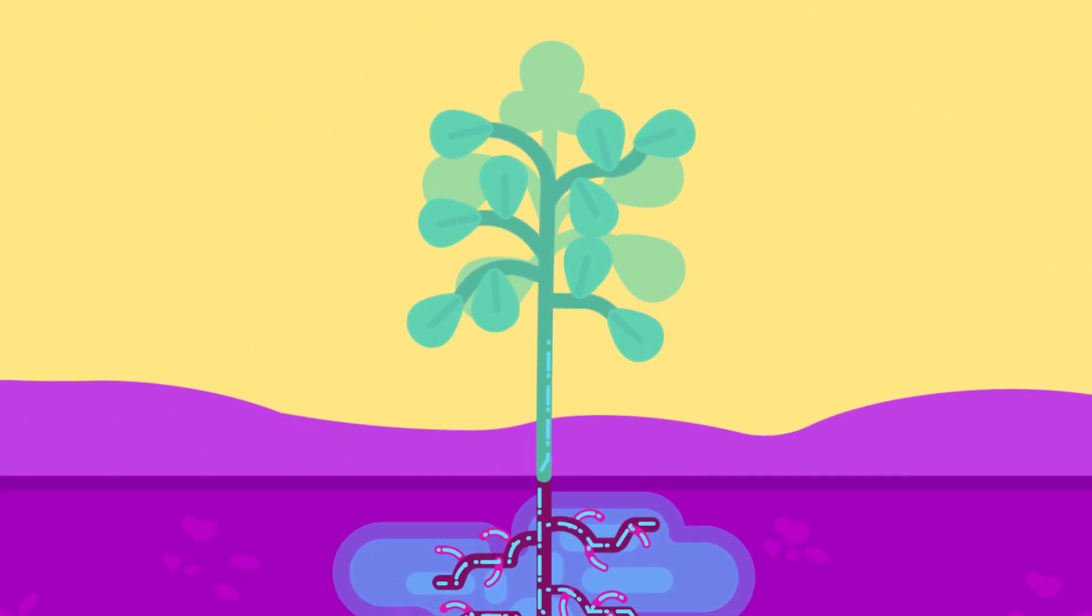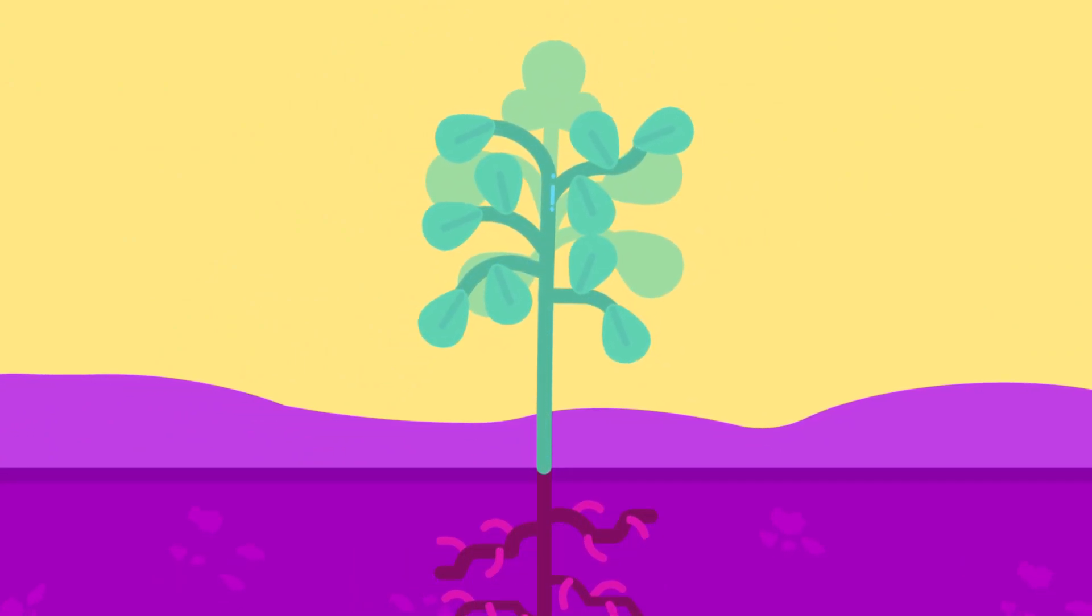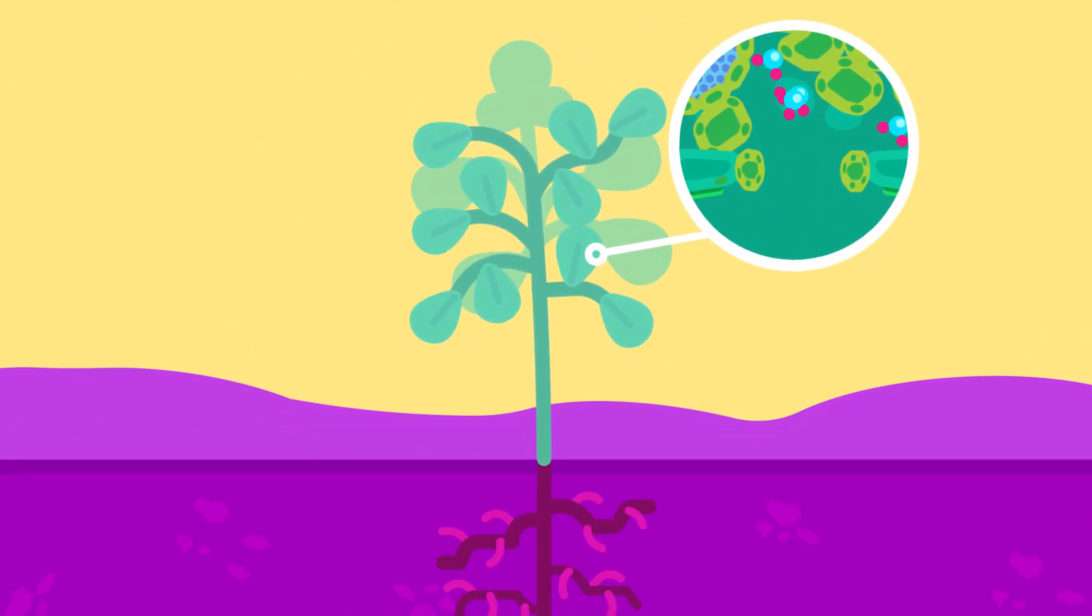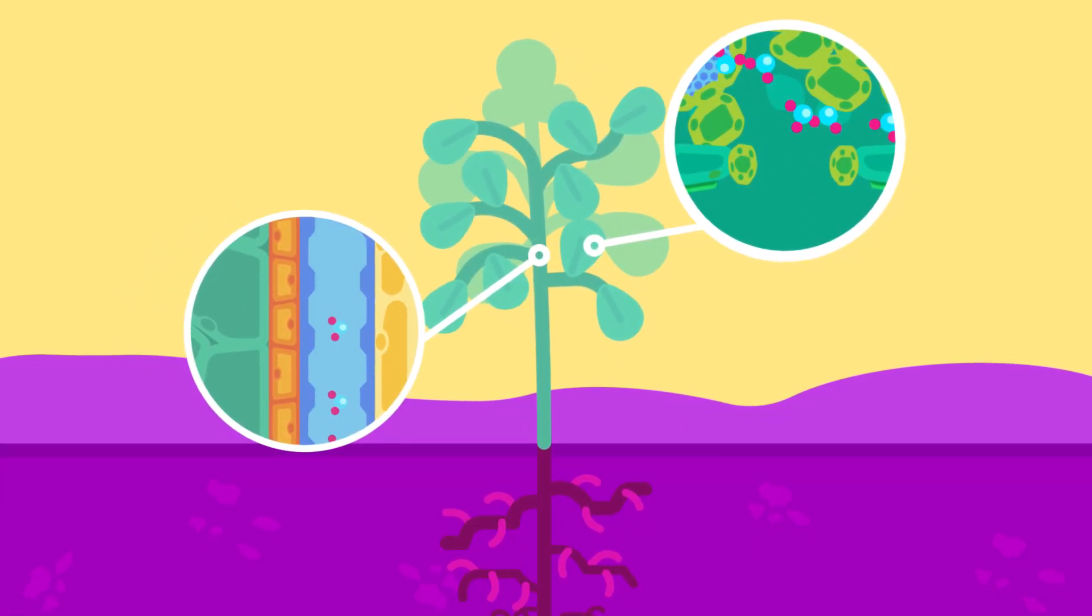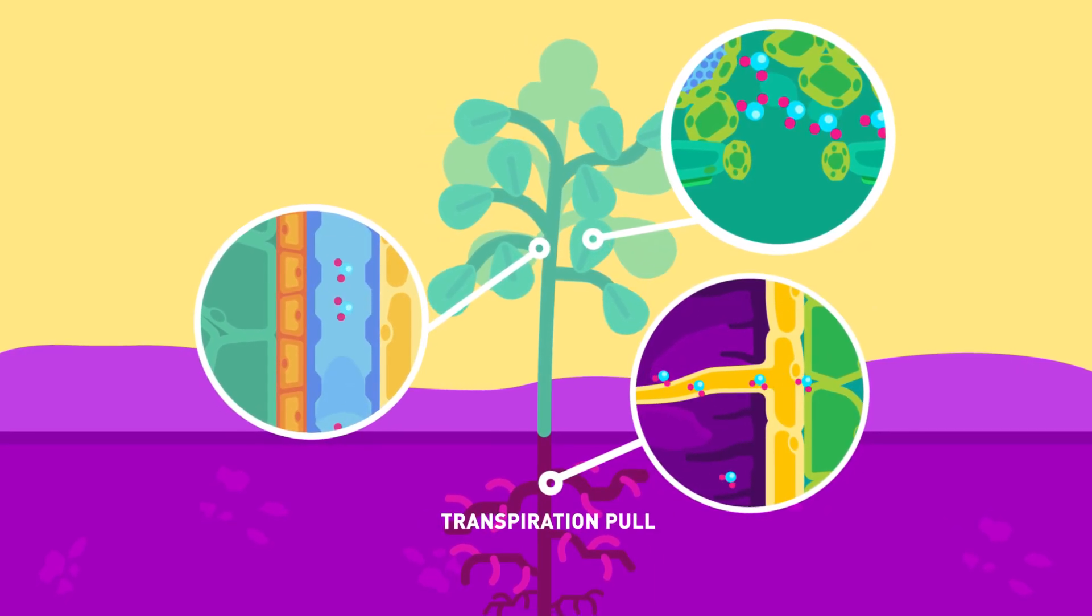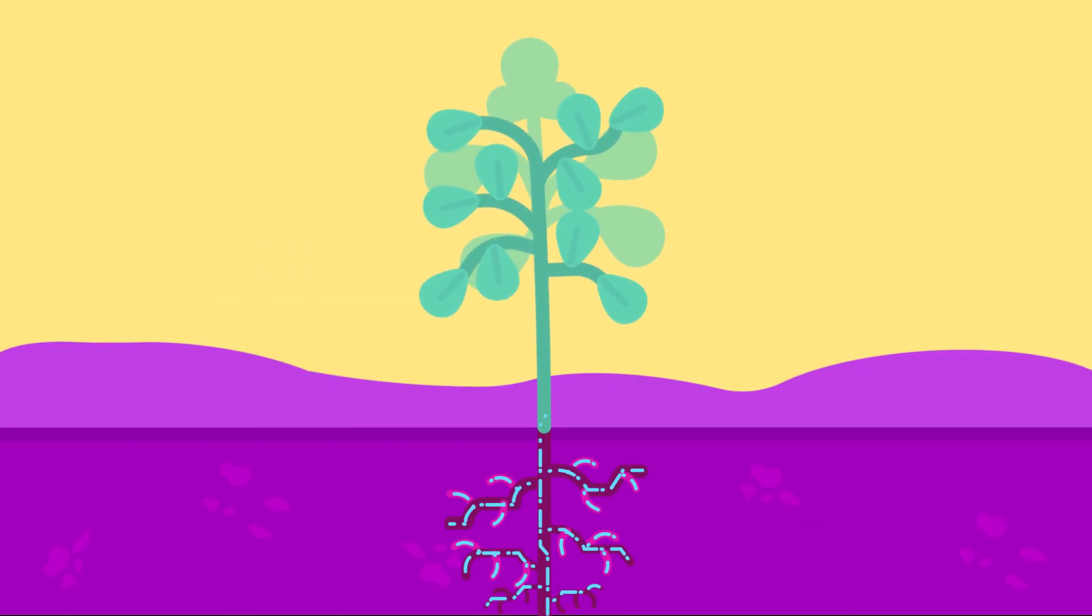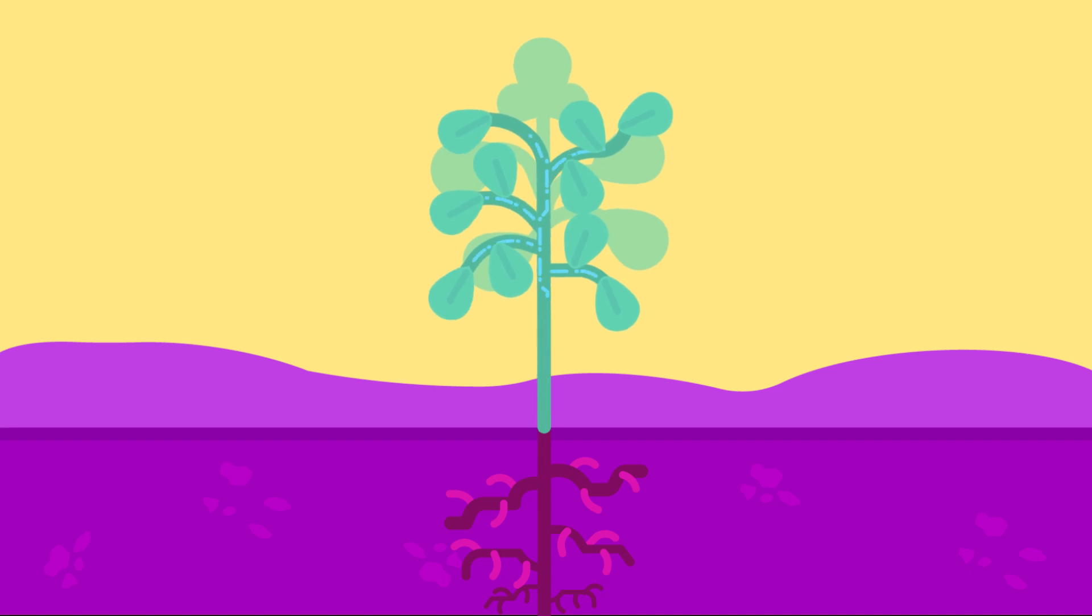Ever wondered how plants draw water up against the force of gravity? The evaporation of water from leaves results in a suction force, which pulls water up the xylem vessels. This suction force is called transpiration pull. It is the main force that pulls water and mineral salts up the plant.